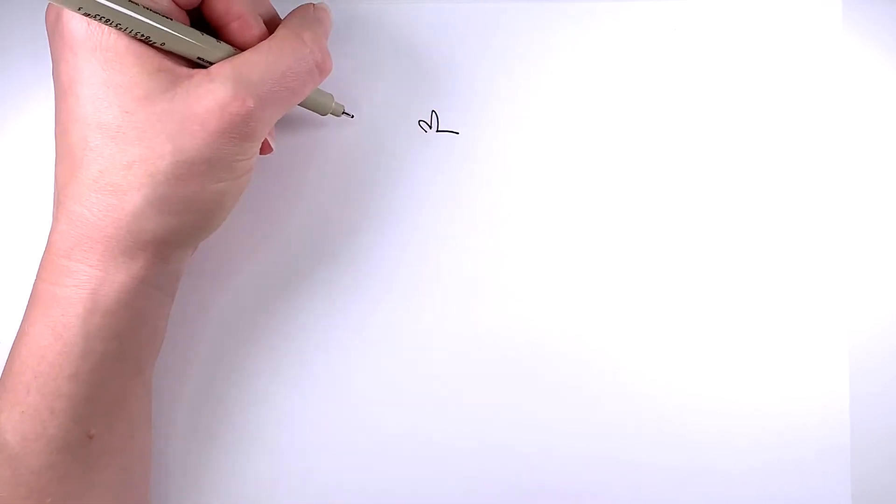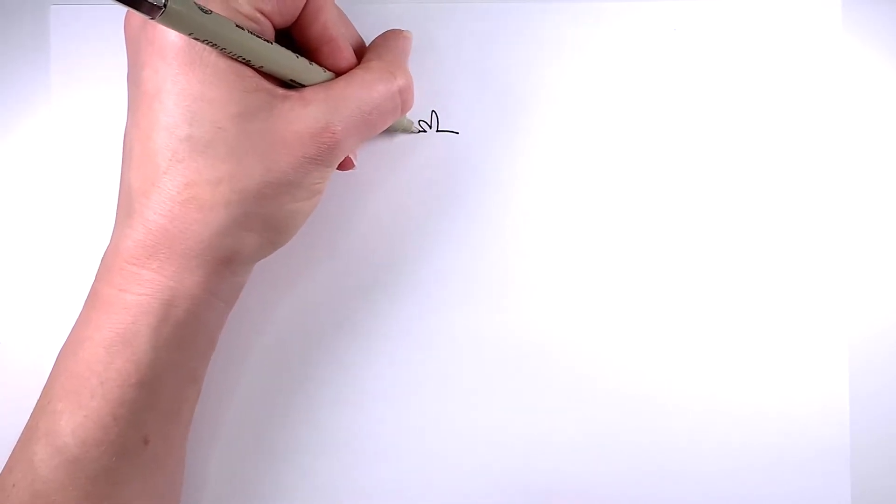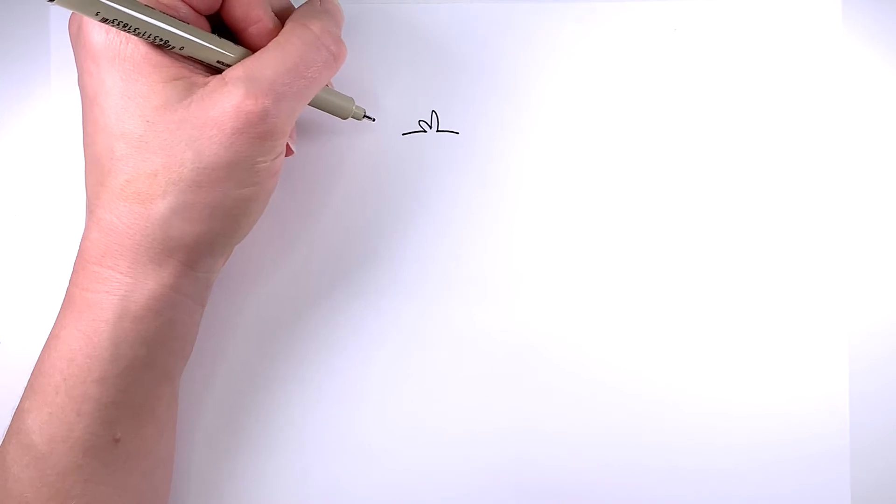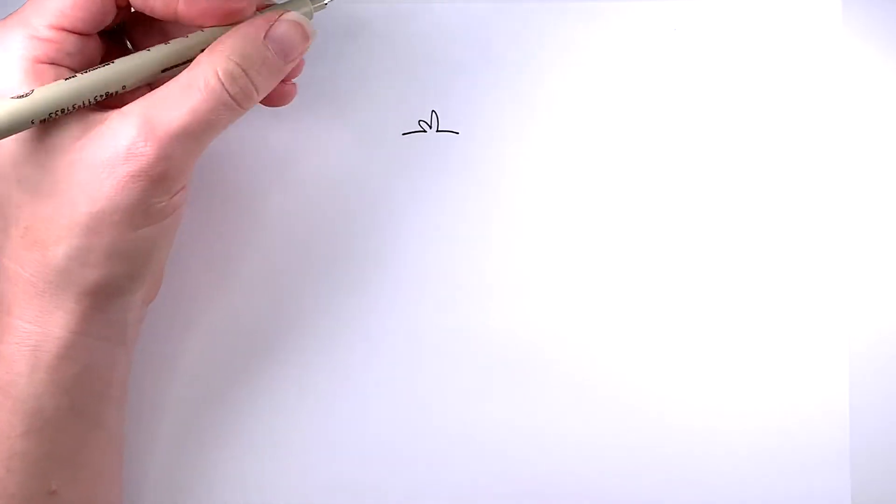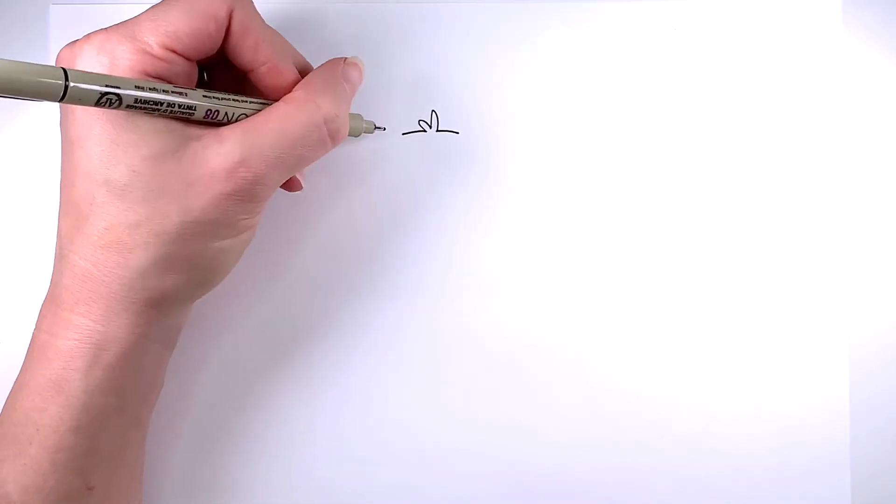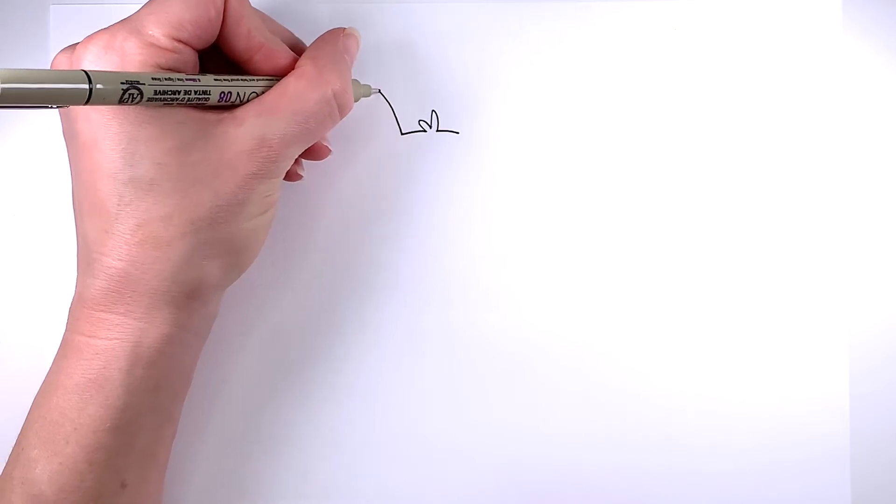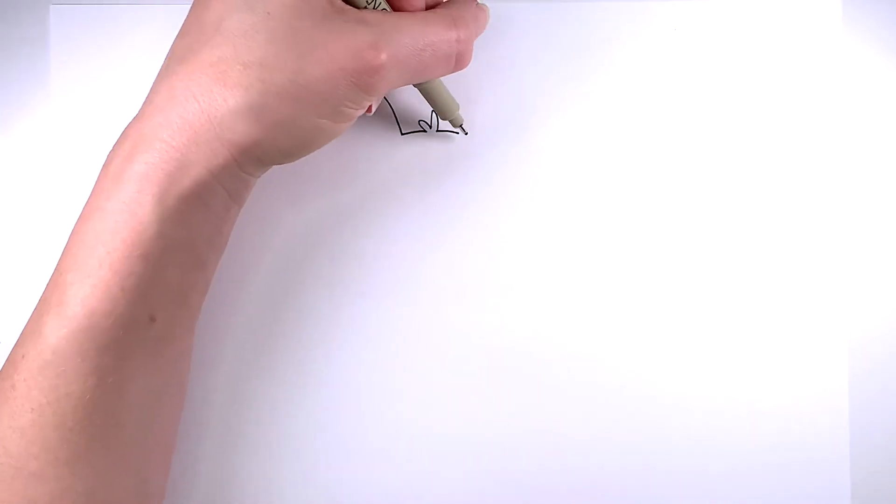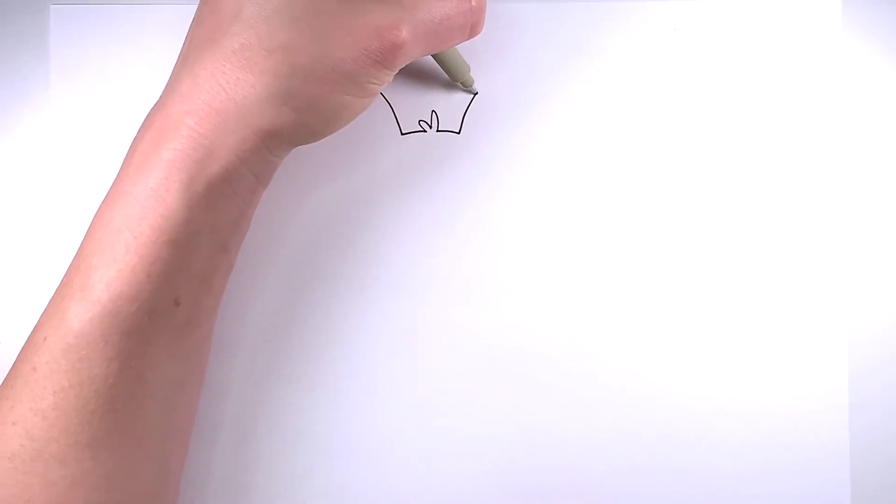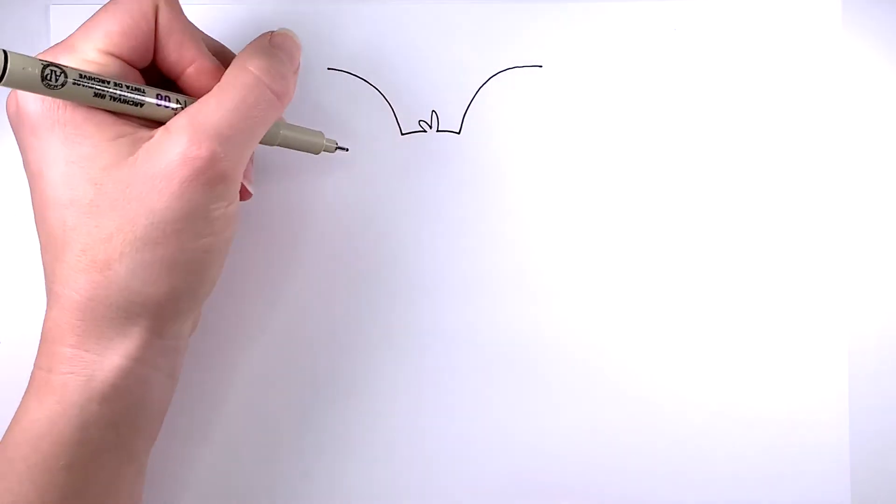And then on either side of those tufts, just draw a small curve. So you have two small curves there. And then on one side just draw a nice long curve going toward the corner of your paper and repeat on the other side.